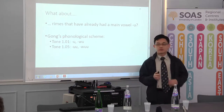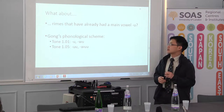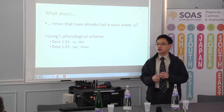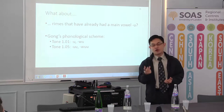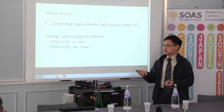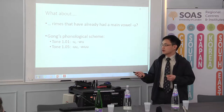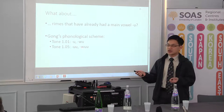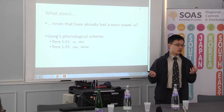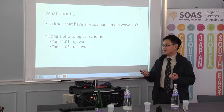But we get another problem. What about the rhymes that already have a main vowel Wu? If the main vowel is already Wu, how can you add another roundness upon a medium Wu? Gong's proposal is that, for example, in 1.01 the first cycle's main vowel is Wu and the second cycle is also Wu, and for 1.05 the main vowel is Wu and the second cycle is also Wu. So how do you distinguish Wu from Wu? This is quite problematic, and this is why I find it so interesting.